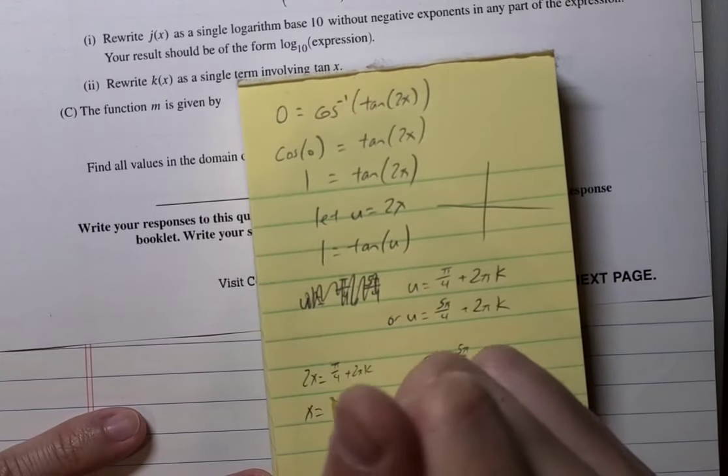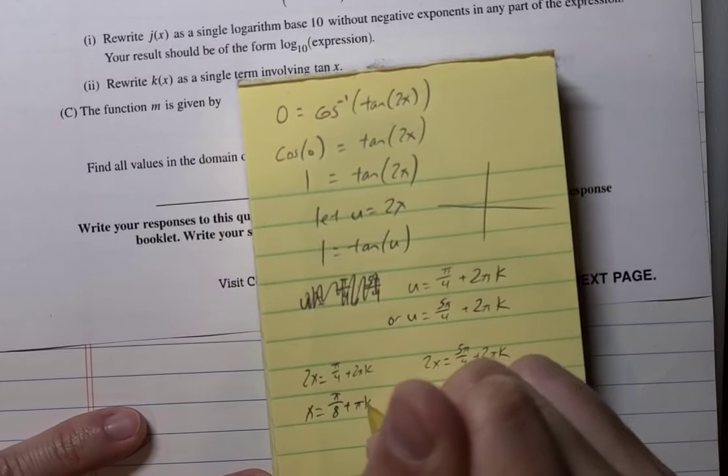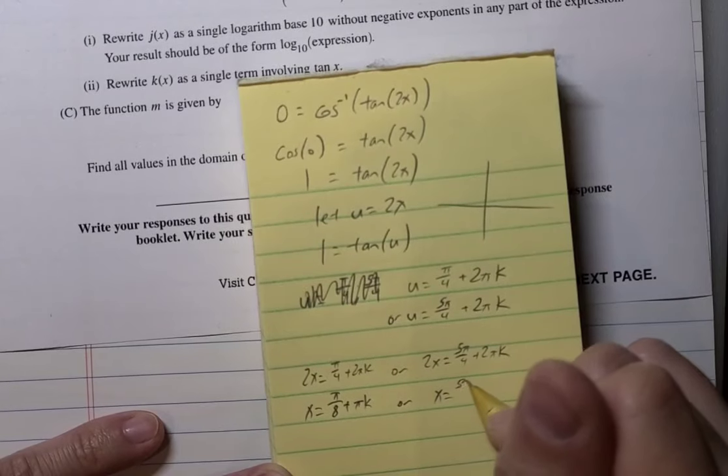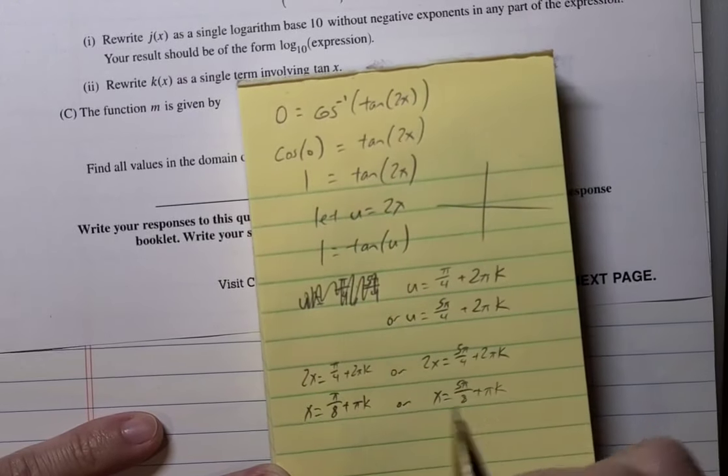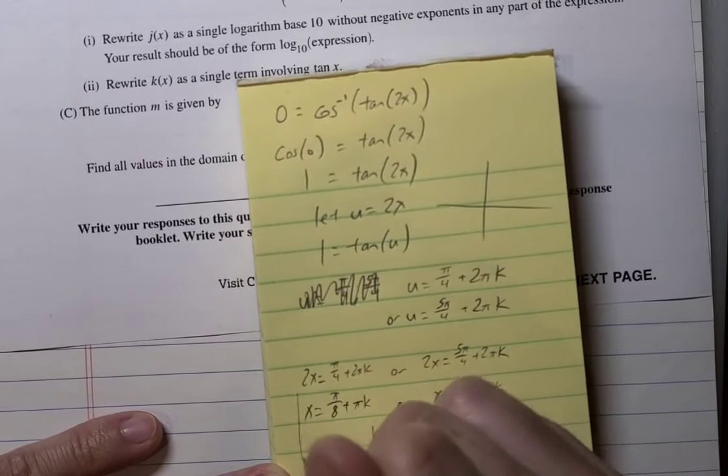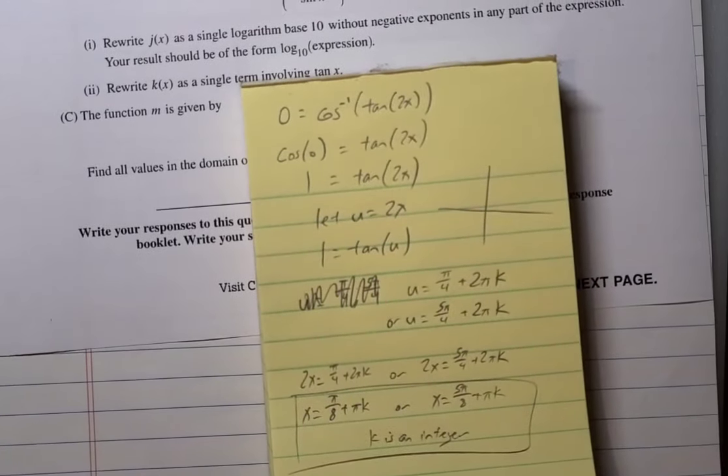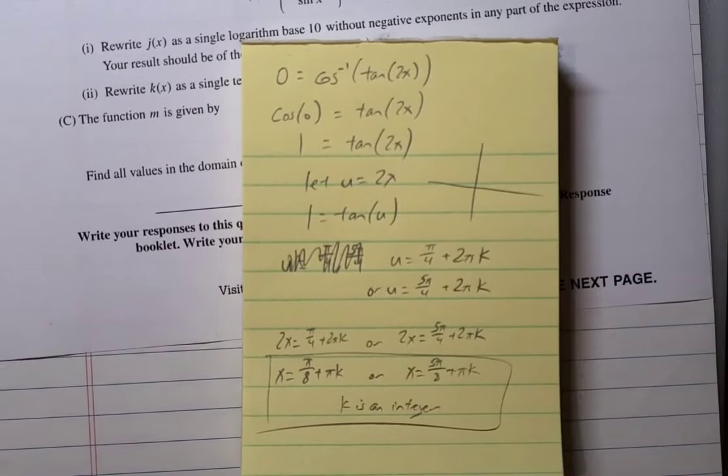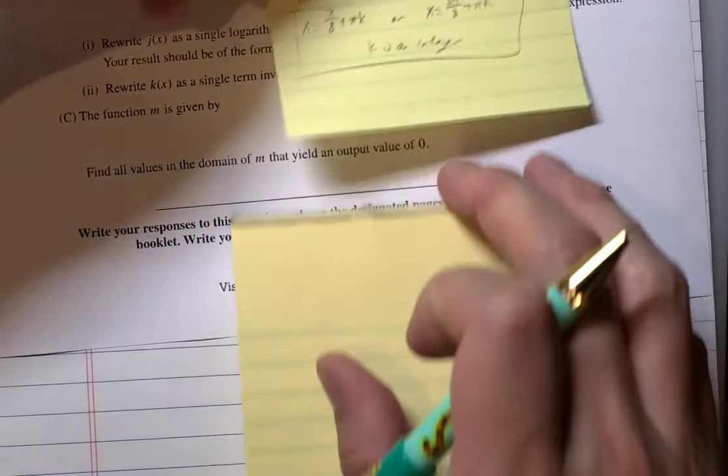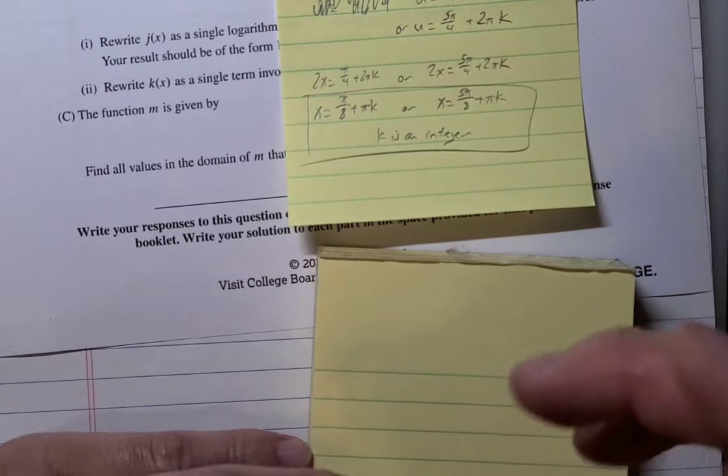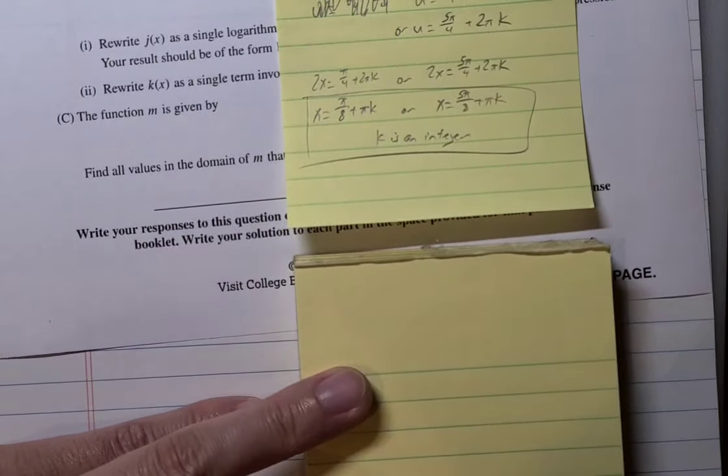And then... I was over here. So, we divide by 2. X is pi over 8 plus pi k. And x is 5 pi over 8 plus pi k, where k is an integer. And that's my answer. And actually, now that I think about it a little more... I could have just wrote... So, okay. Let me draw another page. This might not be the best answer. So, they might subtract me points now that I realized it real quick. As I was about to close the video.